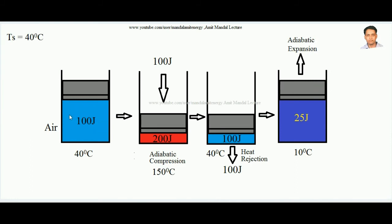The initial internal energy of the air inside this cylinder is 100 joules, and the initial temperature of air is 40 degrees centigrade, which is in equilibrium with the surrounding temperature. Note that these numerical values are fictitious — taken just to make the concept clear.